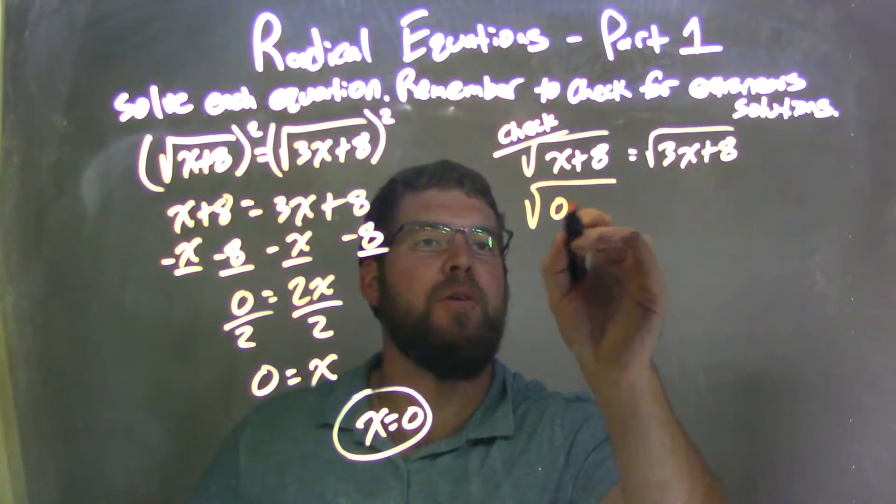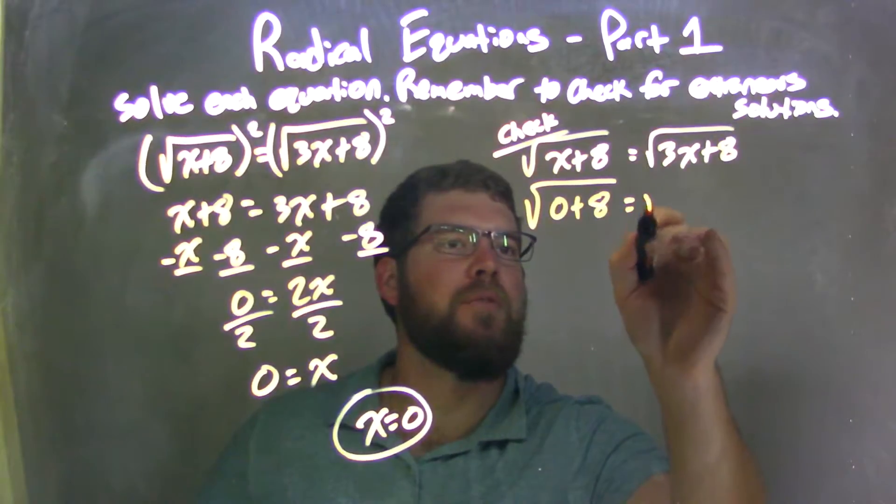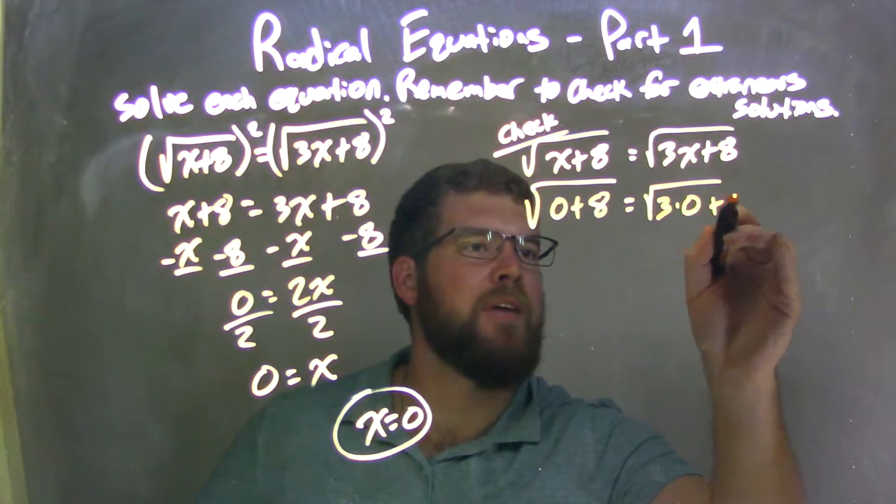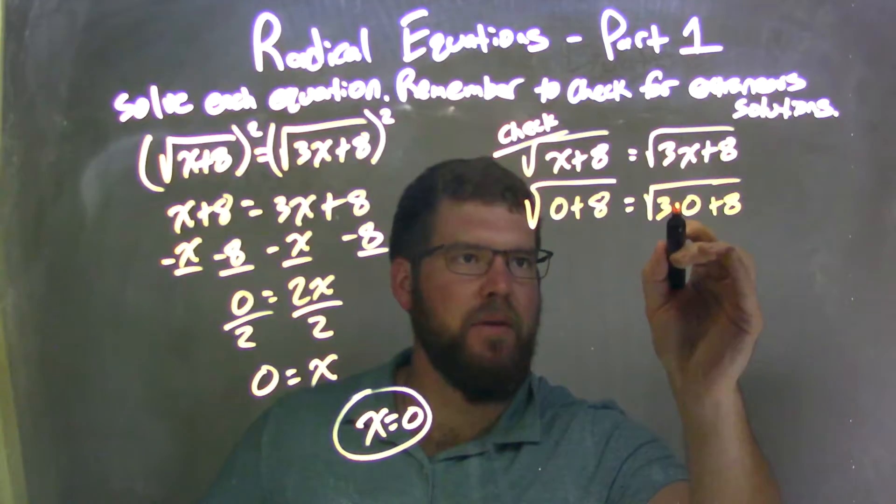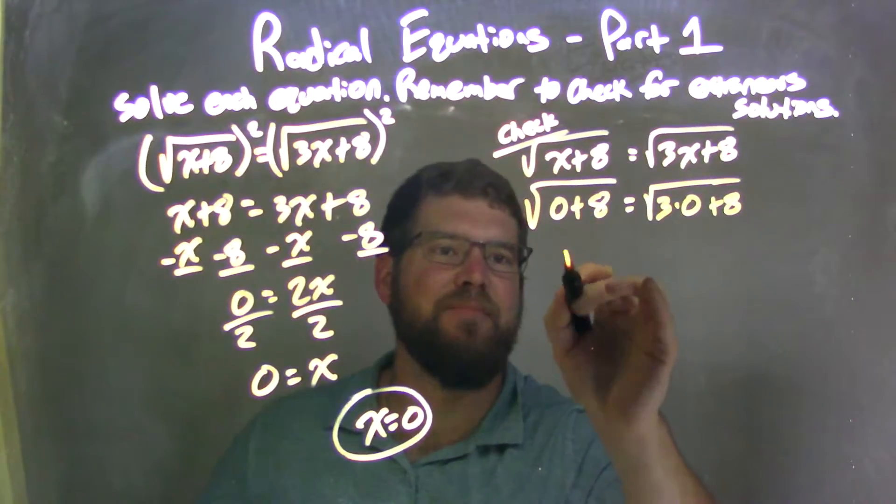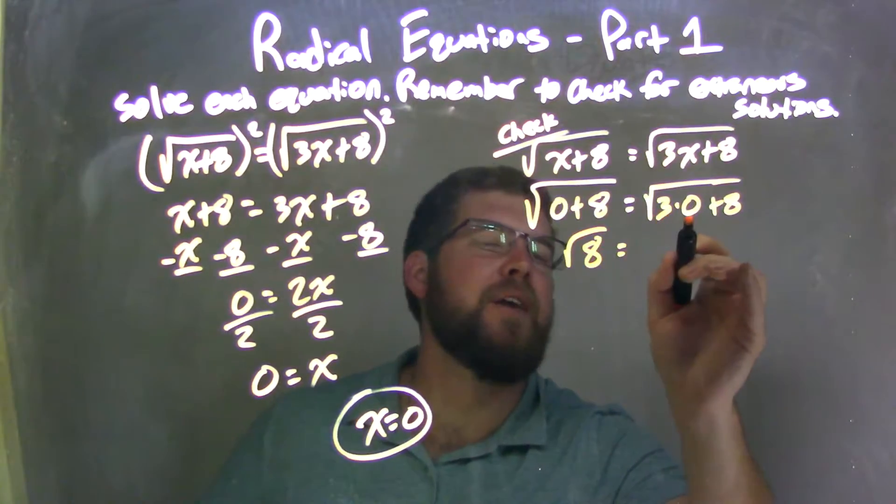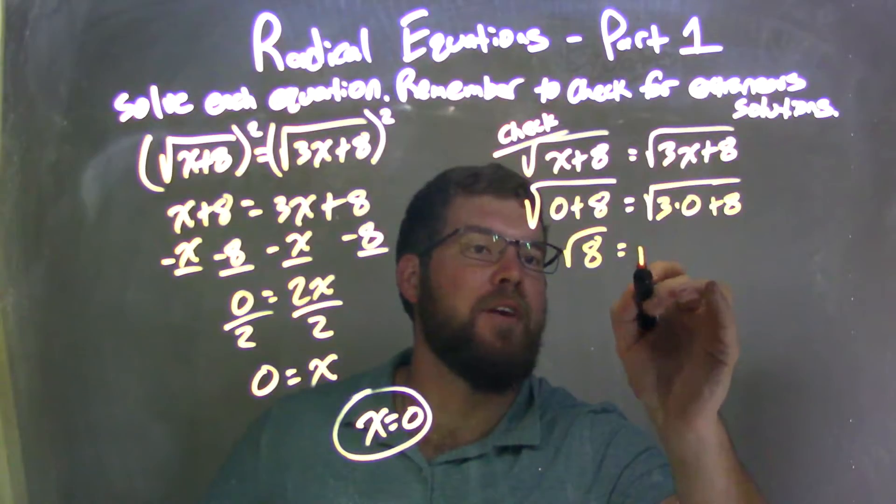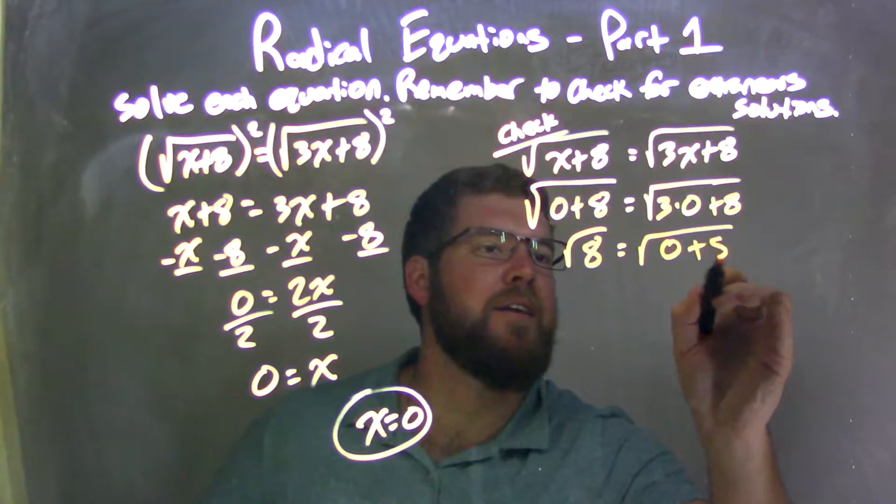So we have 0 for x here, 0 plus 8 equals 3 times 0 plus 8. Well, 0 plus 8 is just 8, square root of 8 here, and 3 times 0 is 0, I'll not skip a step, 0 plus 8 here.